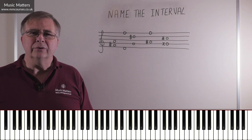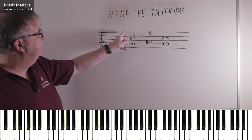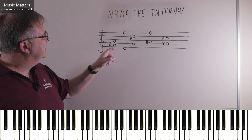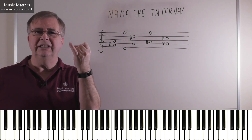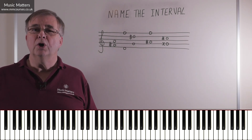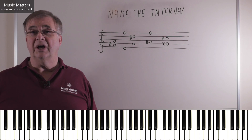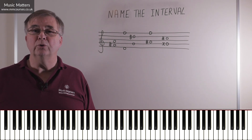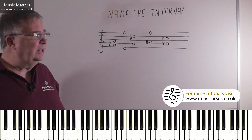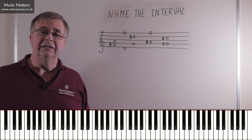There's also something else you could call it — a tenth is perfectly reasonable and accurate. If you bring the F down an octave, or the D up an octave, you could call it some kind of third, because D, E, F is a third. When we have intervals bigger than an octave, we call them compound intervals. So you could call this a compound third — either a tenth or a compound third is perfectly reasonable. It's a minor tenth, or a compound minor third.